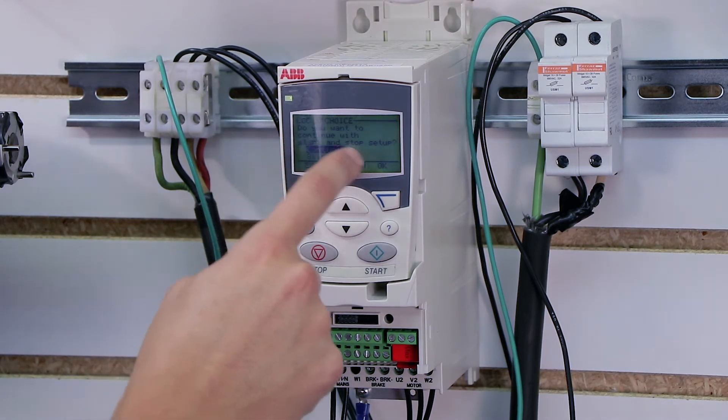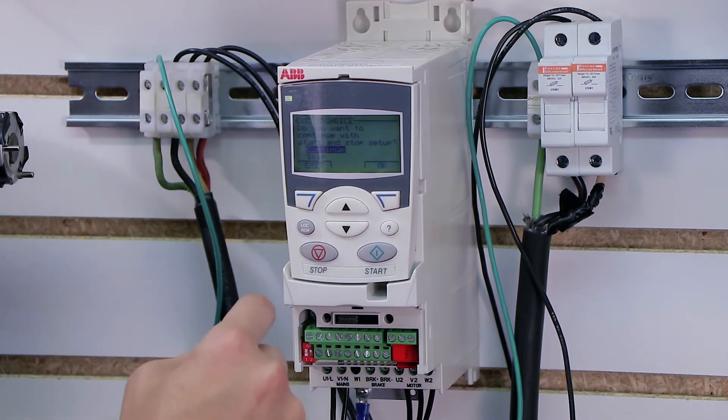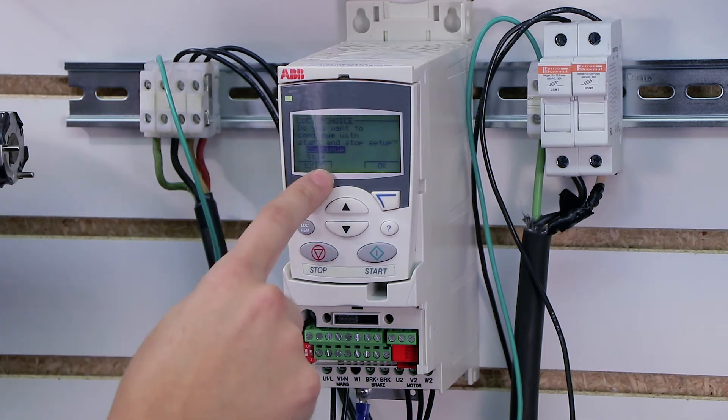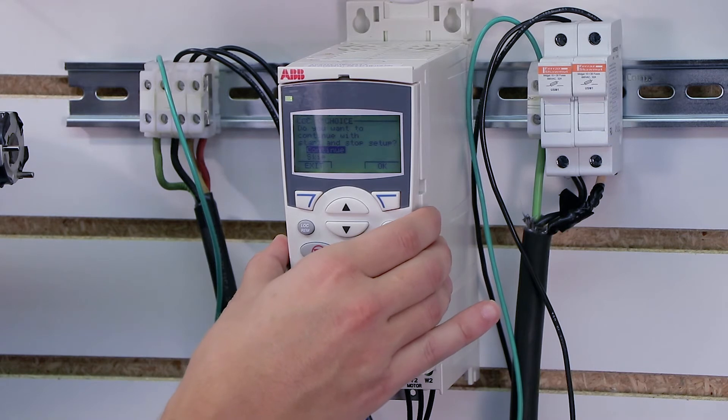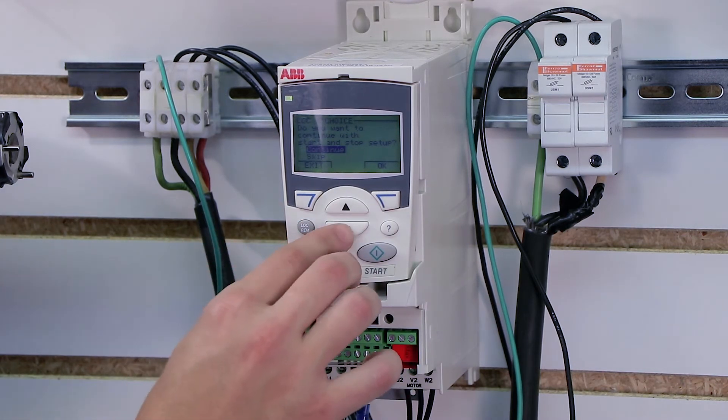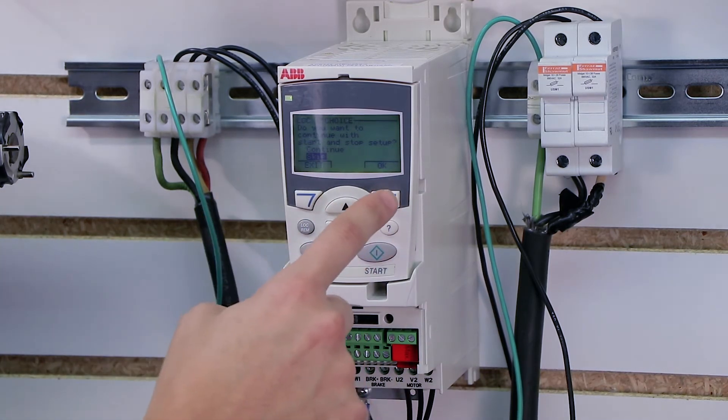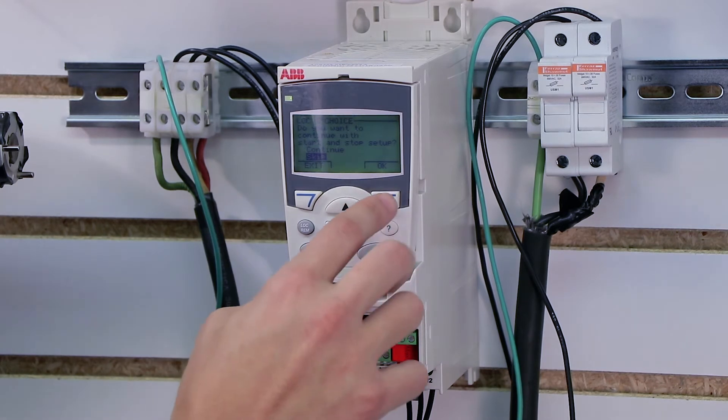Then it's asking me if I want to continue with my start and stop setup. Now in this particular instance, I'm not going to do this section because by default, the 355 is set up to start and stop from the keypad. You'll see that soon. So I'm going to skip this one as well, because I'm not wiring a start stop control yet. So I'm going to click okay.